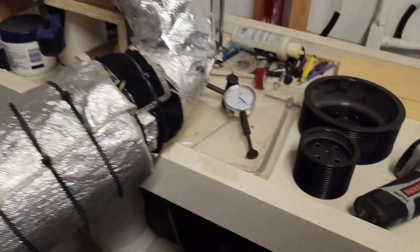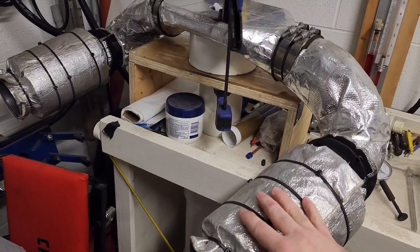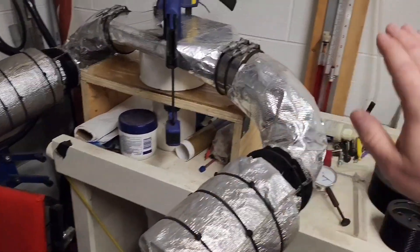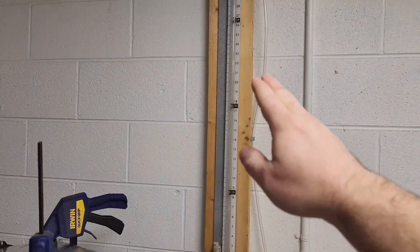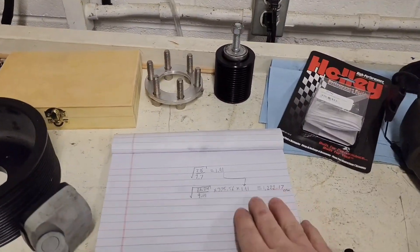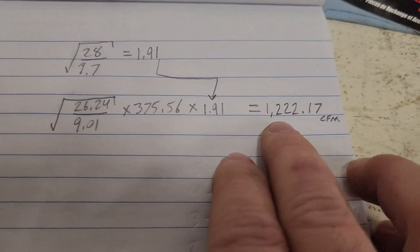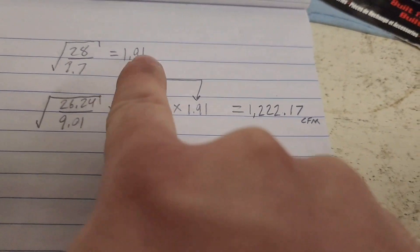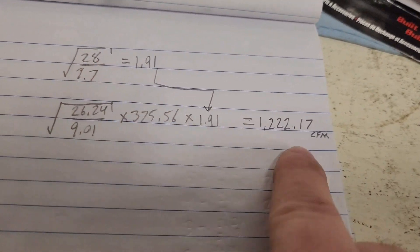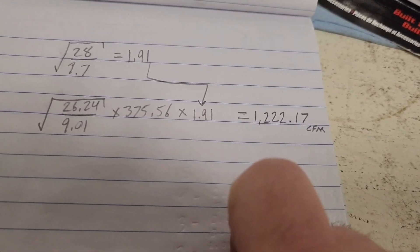Now this is rated for 1,400 CFM at 28 inches of water. And if I could get this thing up to 28 inches of water, I would say that extra 200 CFM is about right. So I'd say 1,400 CFM is a pretty good number. This is not a perfect science, just this correction factor here. If you were to test it at 28 inches, it would be a little bit different than this, and I think 1,400 is probably pretty good.